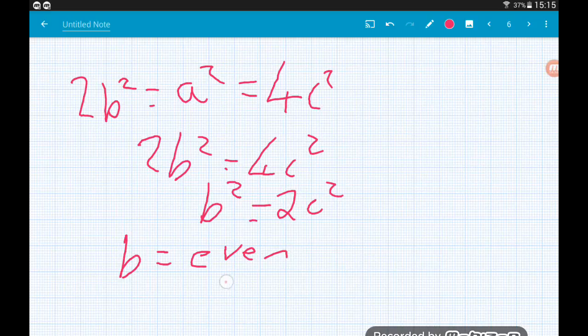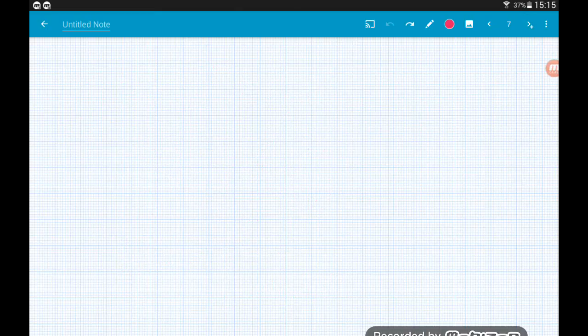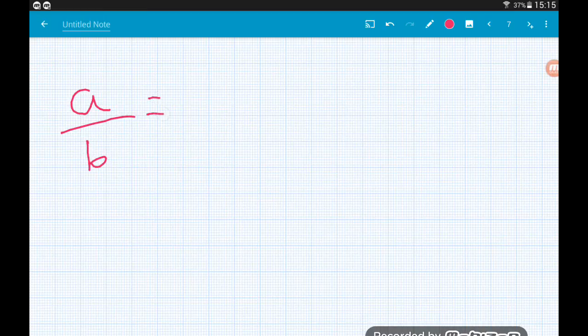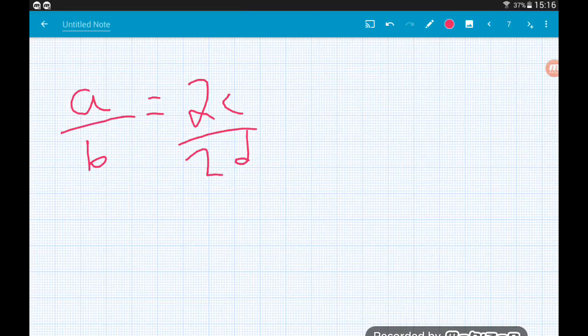So let's say that b is equal to 2d. Okay. Now our fraction a over b has become 2c over 2d. Now there's a common factor of 2 in there.